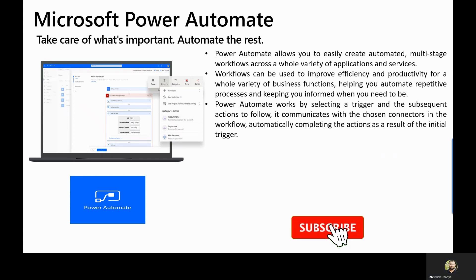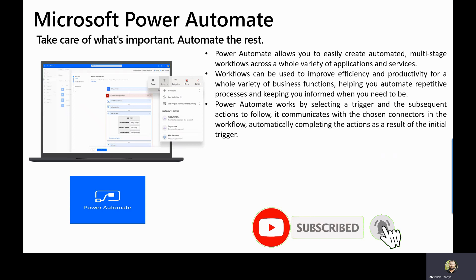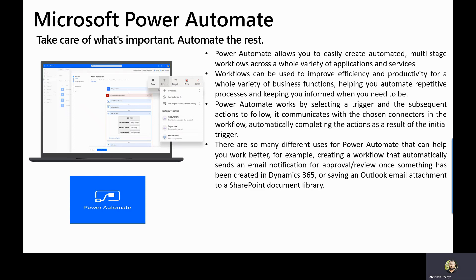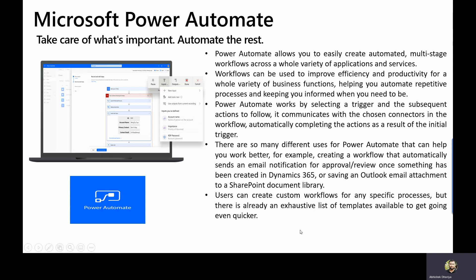Basically, it's a combination of a trigger, the subsequent actions you want to follow, and the connectors from where you need to pull your data. There are so many different uses of Power Automate — for example, creating a workflow that automatically sends an email notification for approval or review once something has been created in Dynamics 365, or saving an email attachment to a SharePoint document library. Users can also create custom workflows for any specific process.